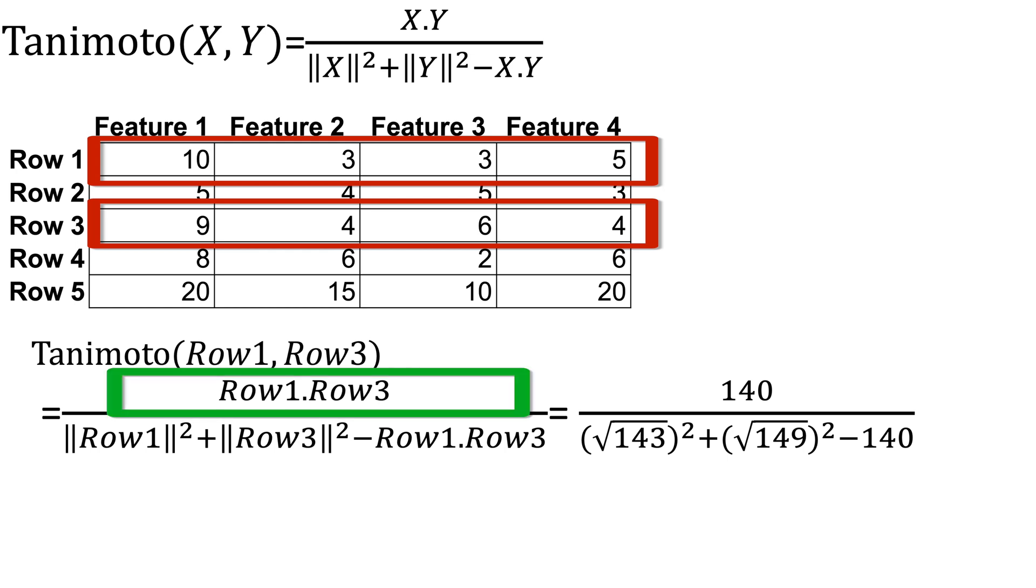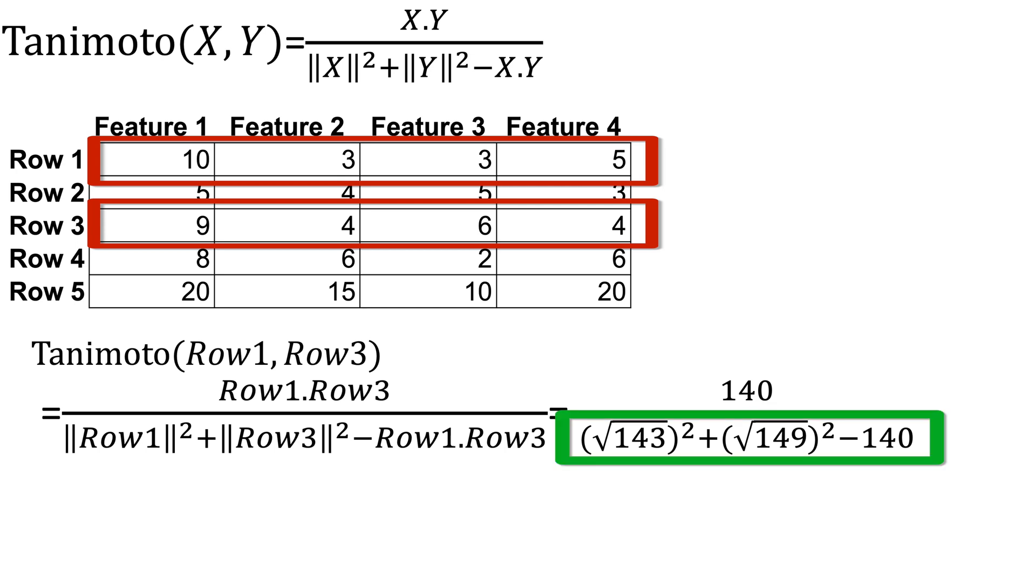Watch that video after you complete the current one for Tanimoto similarity. In the numerator of the formula for the Tanimoto similarity, we have the dot product, which is 140. In the denominator, we have square of square root of 143 plus the square of square root of 149 minus the dot product of the two vectors, which is 140. After pressing some buttons of the calculator, you will find that the calculated Tanimoto coefficient or similarity between row 1 and row 3 is 0.92105263.